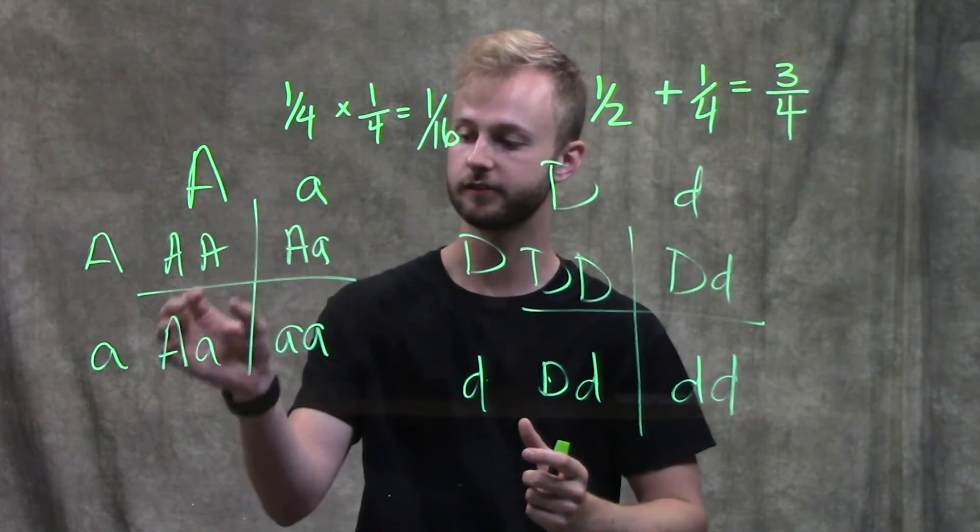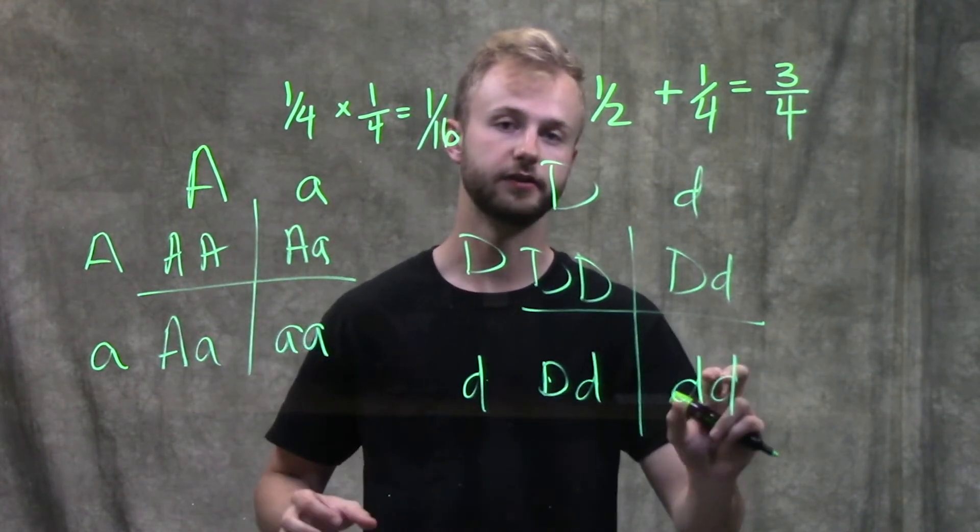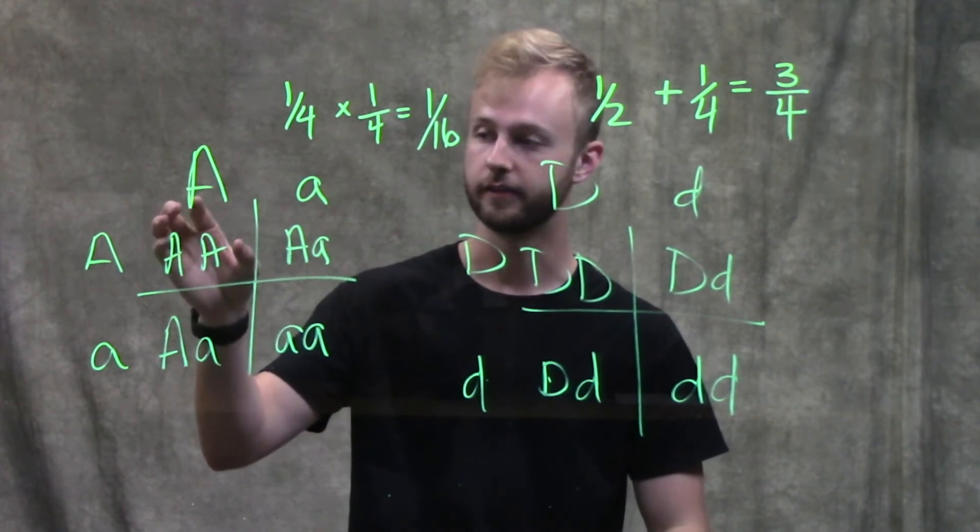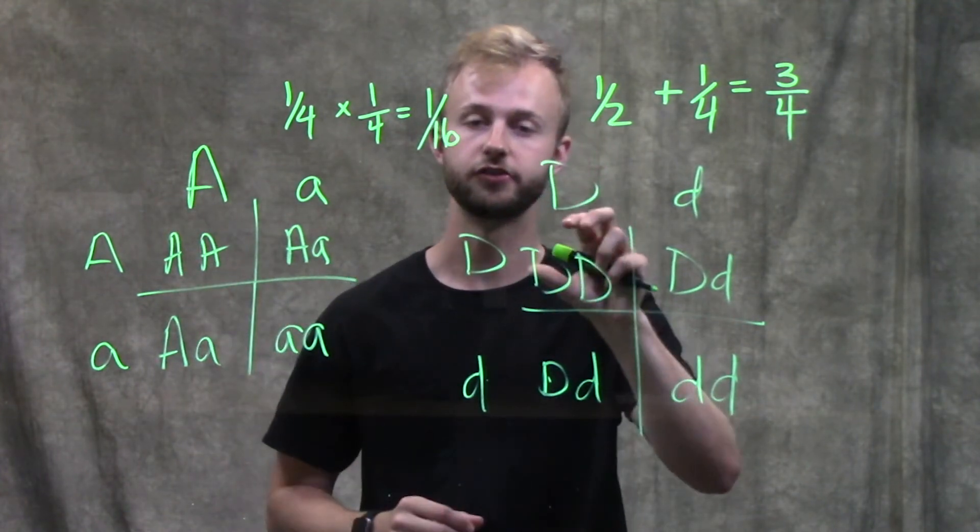We use addition when we want to know if they're going to have this genotype or that genotype. We use multiplication when we want to know if they're going to have this genotype and another genotype.